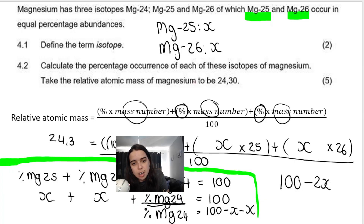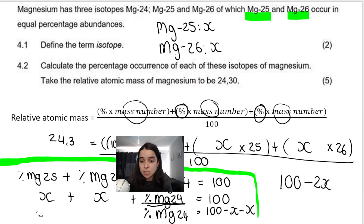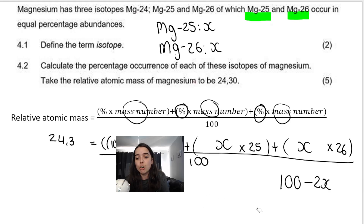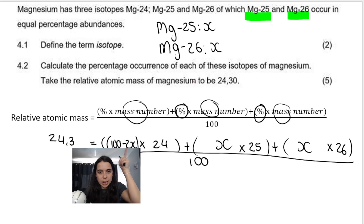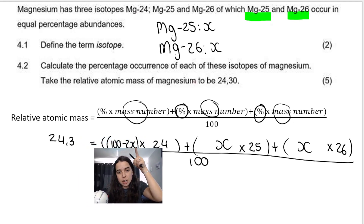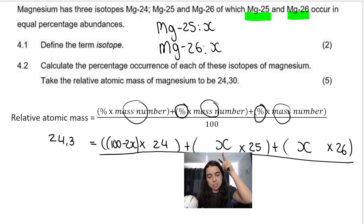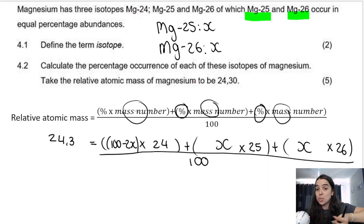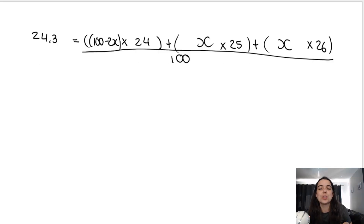I substitute (100 − 2x) in its own bracket for Mg24. Once you've figured that out, you can erase all the rough work — the rest is just algebra, basically grade 10 solving. So the formula has: (100 − 2x) × 24 for Mg24, x × 25 for Mg25, and x × 26 for Mg26, all divided by 100, equal to 24.3.